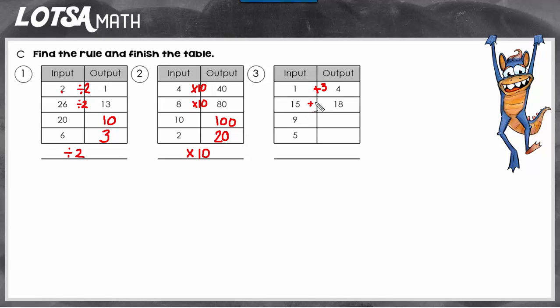Is 15 plus 3 equal to 18? Yes. And if you found 2 pairs that follow the same rule, you know that is the rule. So the rule for this table is plus 3.